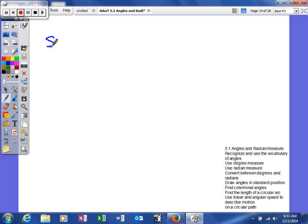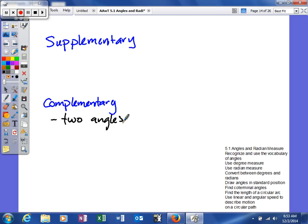What we're talking about next are supplementary and complementary. So complementary angles, we'll start with that one. It's basically two angles whose sum is 180 degrees. So two angles whose sum is 180 degrees. Or in terms of radians, the sum would be equal to pi. So kind of keep that in mind when you're talking about complementary angles.